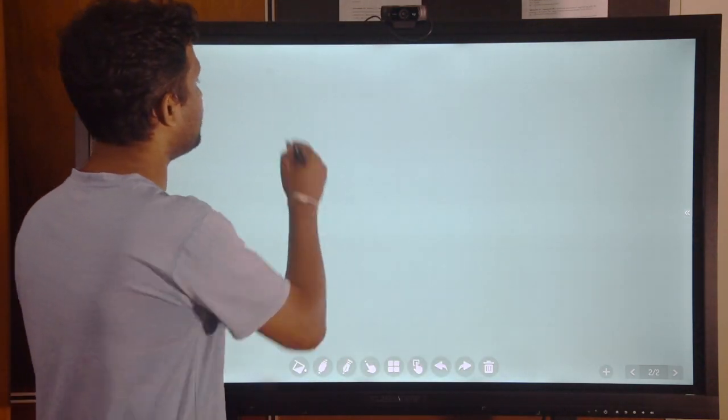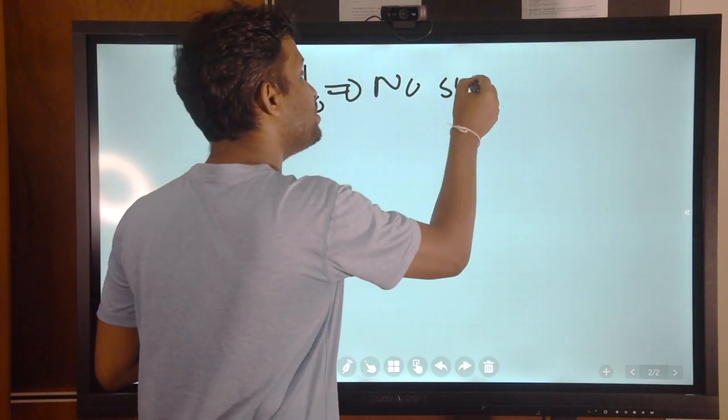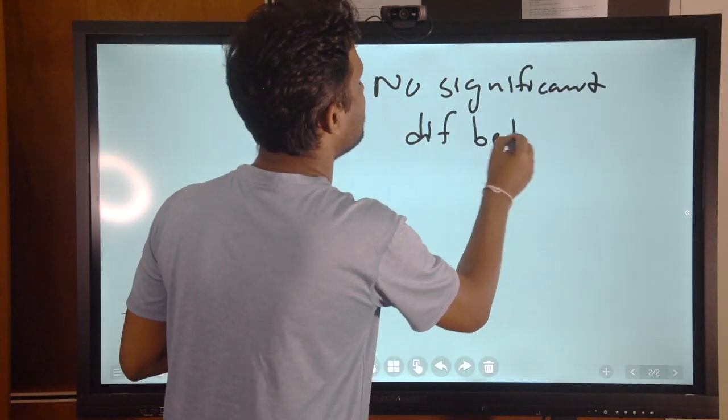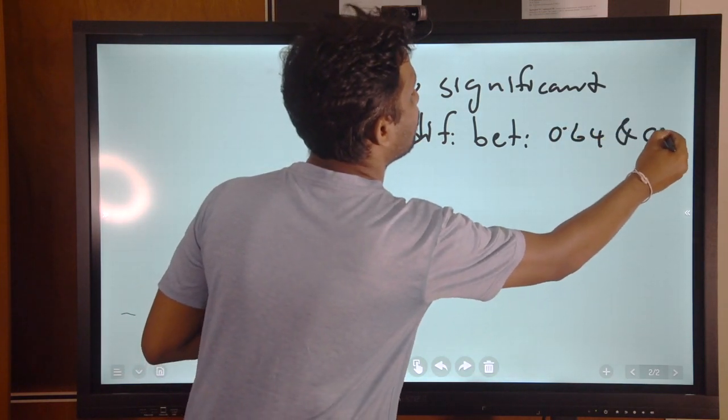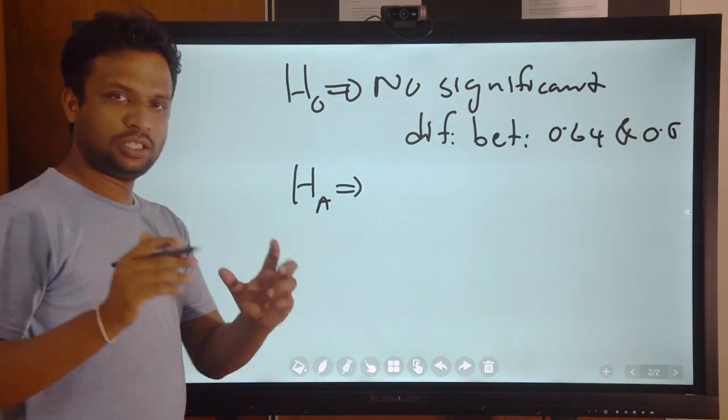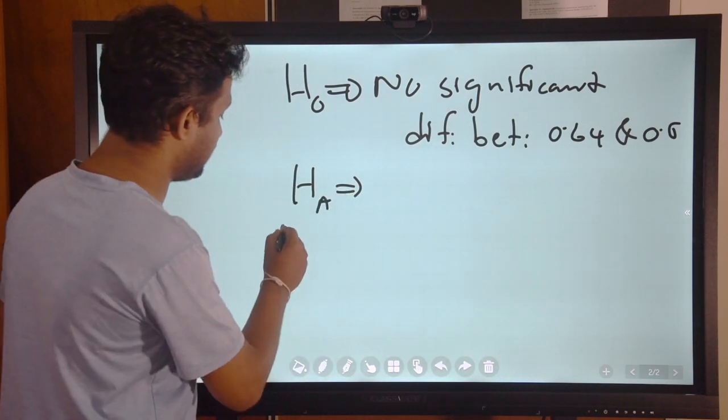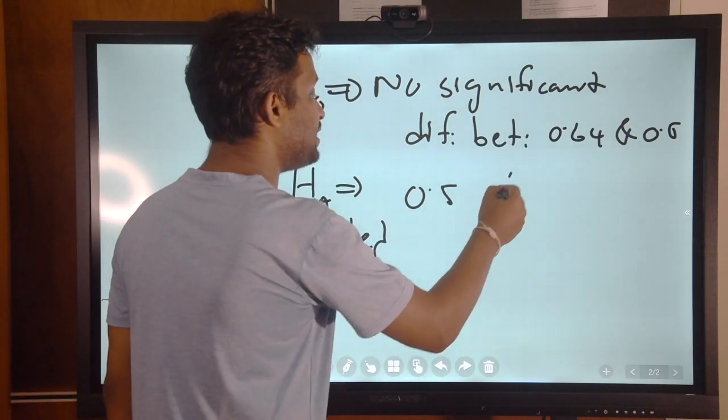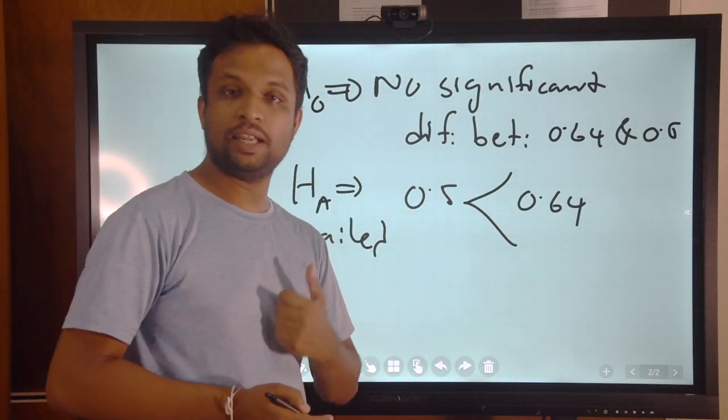Now what is our null hypothesis? Our null hypothesis is there is no significant difference between 0.64 and 0.5. So what is our alternative hypothesis? Can you think whether this is one tail case or two tail case? This is one tail case. Why? We are interested in whether 0.5 is significantly less than 0.64.